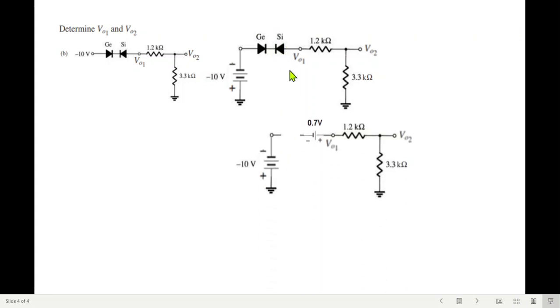So our equivalent circuit will look like this. This is open circuit. This will replace a 0.7-volt battery, and this is the circuit.